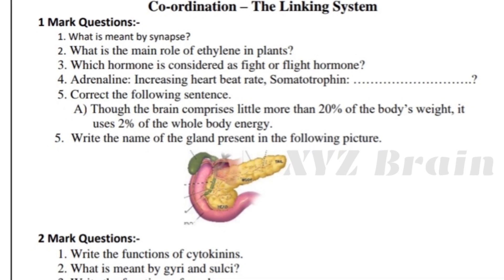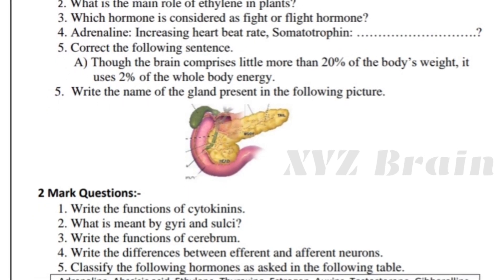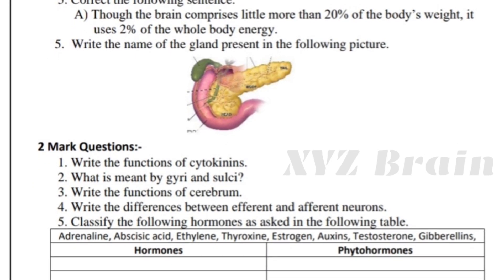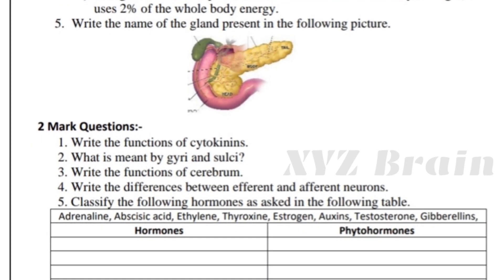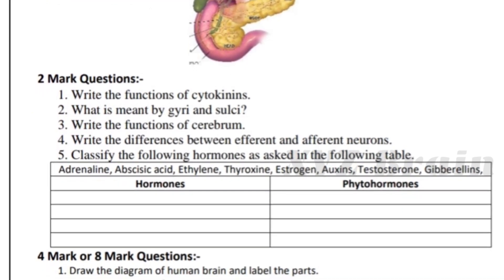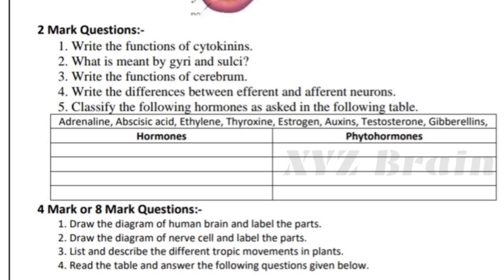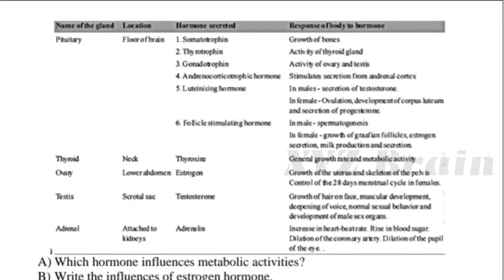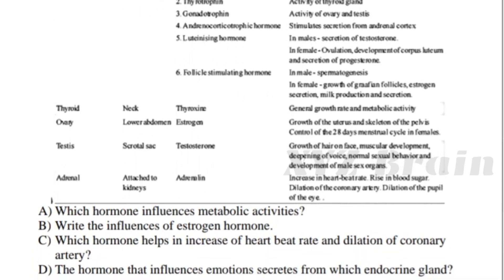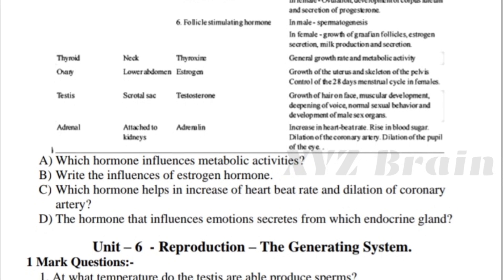For two marks: function of cytokinesis, gyres, cerebrum, cerebellum, hormones, and phytohormones. For four marks: function of cytokinesis and the human brain. Human hormones, glands and organs including ovaries. Important information will be covered for 8 marks or 4 marks.